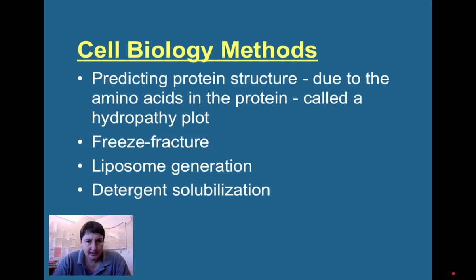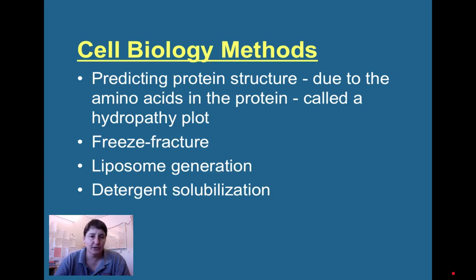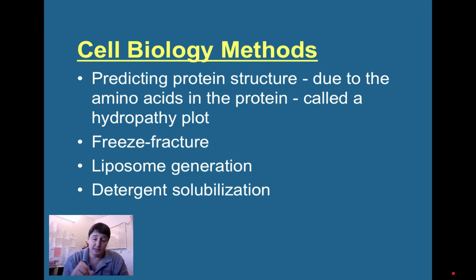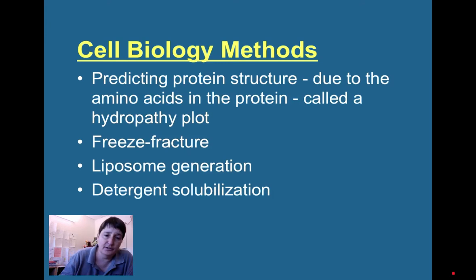In this class, we need to talk about methods for understanding cell biology. We'll discuss predicting protein structure based on just the amino acid sequence—predicting alpha helices, beta sheets, and even tertiary and quaternary structures. There's also freeze fracture, which has come back to look at what's actually between two membranes. There's the production of liposomes—little phospholipid balls we make in the lab to study proteins. And you need to understand how detergents can solubilize membranes.